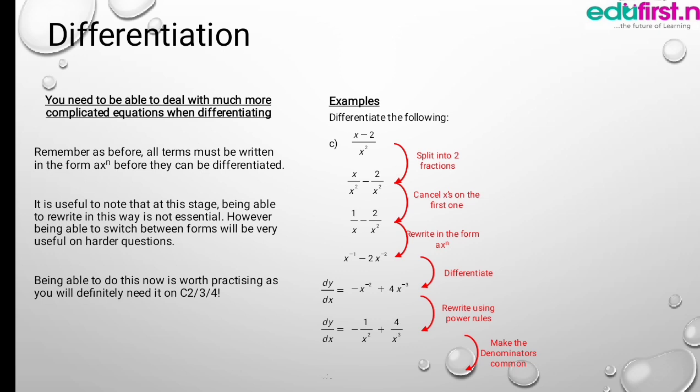Now make the denominators common. The result becomes minus x plus 4 all over x cubed. So when we make the denominators common, we have minus x plus 4 all over x cubed.